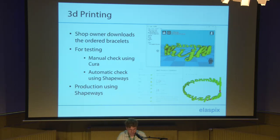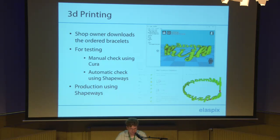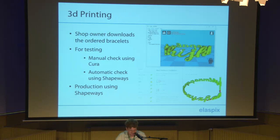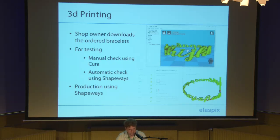Currently we are in a test phase. If an order is given by a customer, the shop owner can download the customized bracelet model. The shop owner is not familiar with 3D modeling technically, but she can run programs like Cura or SketchUp — very easy-to-use programs — just to have a look at the model that was automatically produced by Blender. For example, here you see what we have done with the eye: the dot was directly connected to the body so that it cannot fall apart. This is a manual check, but we are very convinced that our system is already creating very well printable models.